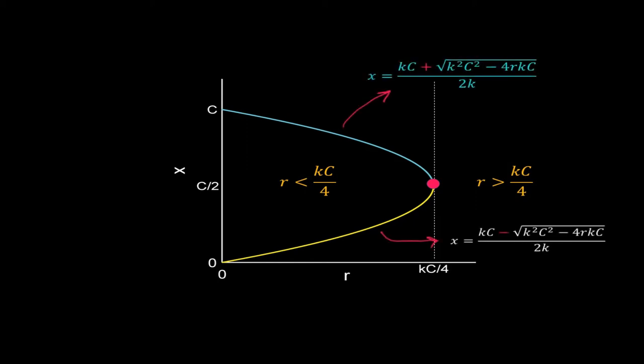The blue part of the parabola is the higher steady state of the system, x equal to (kc plus the square root of k²c² minus 4rkc) divided by 2k, whereas the yellow line is for the lower steady state, x equal to (kc minus the square root of k²c² minus 4rkc) divided by 2k. So parameter r is affecting the number of possible steady states in our model.